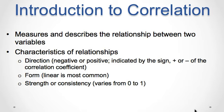A correlation is a numerical value that describes and measures three characteristics of the relationship between X and Y, where X is variable 1 and Y is variable 2. The first characteristic is the direction of the relationship. The sign of the correlation — positive or negative — describes the direction of the relationship.